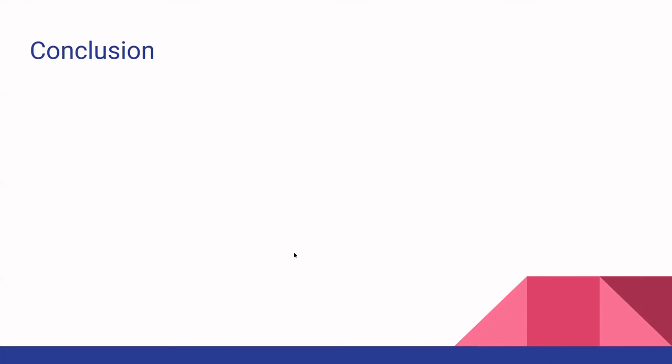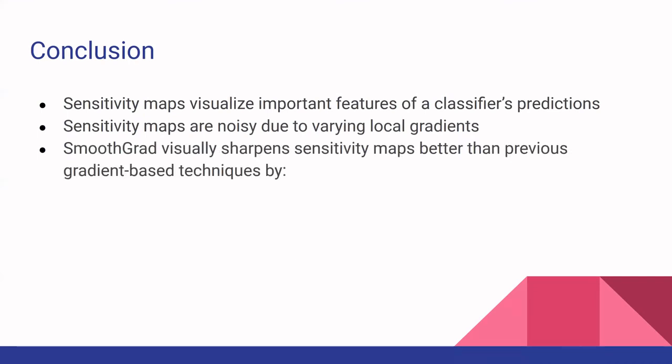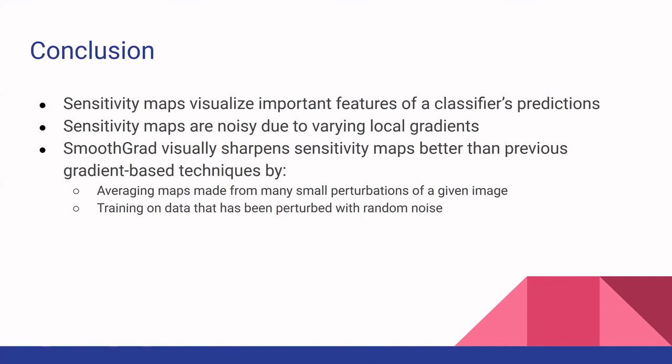In conclusion, sensitivity maps are very good for visualizing pixels important for model prediction and decision making. However, these visual sensitivity maps tend to be noisy because of varying local gradients. This motivated the researchers to introduce SmoothGrad, which visually sharpens sensitivity maps better than previous techniques. SmoothGrad works by applying small perturbations to the input image and then averaging all the maps together. You can also perform SmoothGrad by training on data perturbed with random noise.